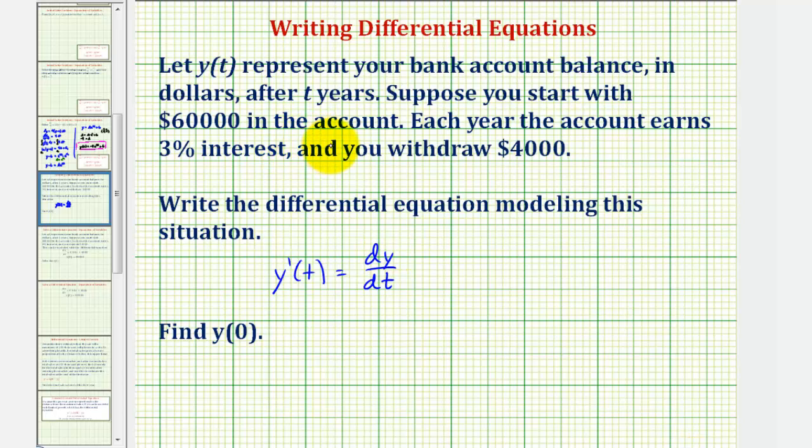There are two things that affect the account balance. The account balance increases by earning 3% interest, but it also decreases because you withdraw $4,000 each year. To determine the increase from interest earned, we convert 3% to a decimal and multiply by the current account balance, which is y(t) or y.